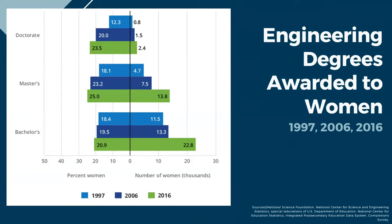Engineering is a field with one of the lowest shares of female degree recipients. Although the number of women receiving engineering degrees at all levels has increased over the past two decades, women's share of degrees has increased only slightly at the bachelor's and master's level — from 18% to 21% and 18% to 25%, respectively. For doctoral degrees, the share has increased from 12% to 24% since 1997. The trend is moving in the right direction, but there is still a lot more work to be done.